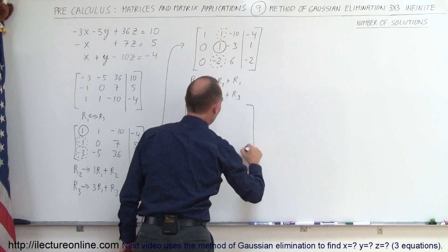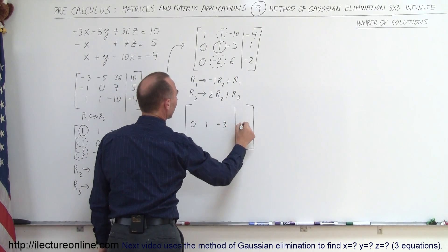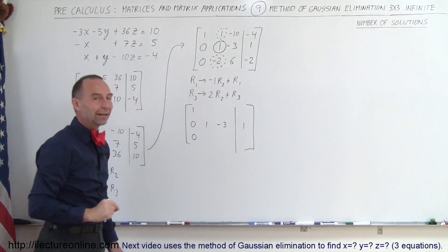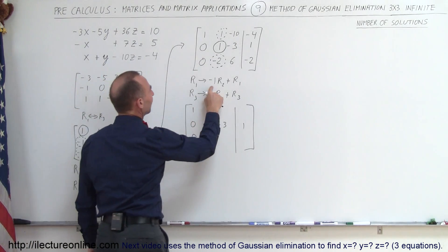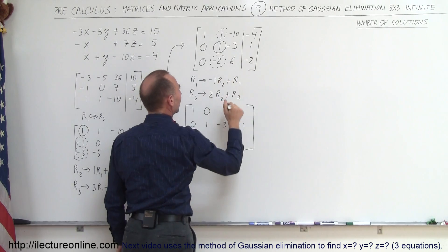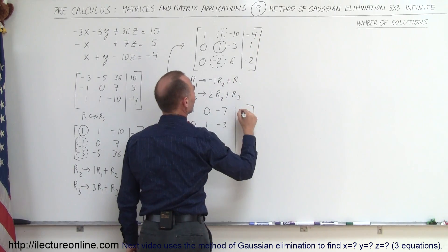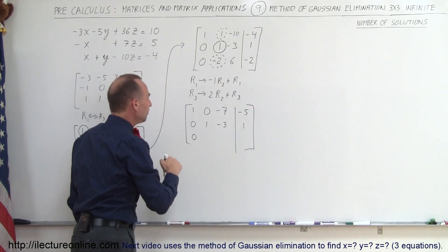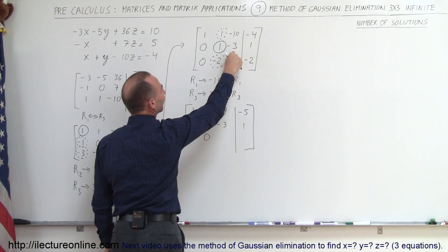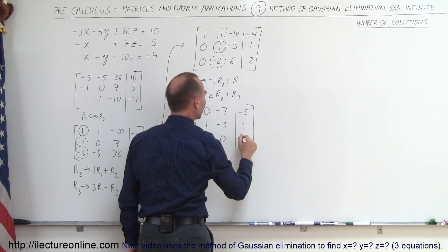The matrix now becomes the following. The second row does not change — that's the one with the 1 in it: 0, 1, negative 3, and 1. For the first row: negative 1 times 1 plus 1 gives 0. Negative 1 times negative 3 plus negative 10 gives negative 7. Negative 1 times 1 plus negative 4 gives negative 5. For the third row: 2 times 1 plus negative 2 gives 0. 2 times negative 3 plus positive 6 gives 0. And 2 times 1 plus negative 2 gives 0.